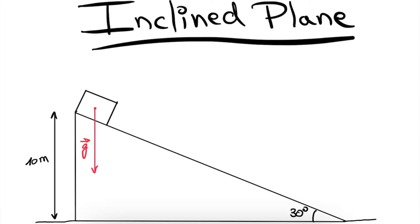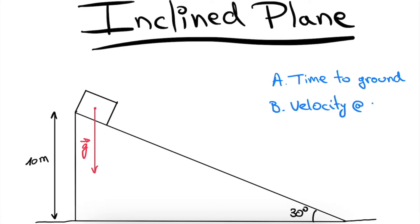As you can see I've pre-drawn the inclined plane. The plane itself has a maximum height of 10 meters and it makes an angle of 30 degrees with the ground. The object that we'll be studying is at the top of this plane and it will slide down towards the ground under the force of gravity, which I've drawn here as the red vector. We will be answering two questions: first, the time for the object to reach the ground sliding along this plane, and second, the velocity when the object reaches the ground.